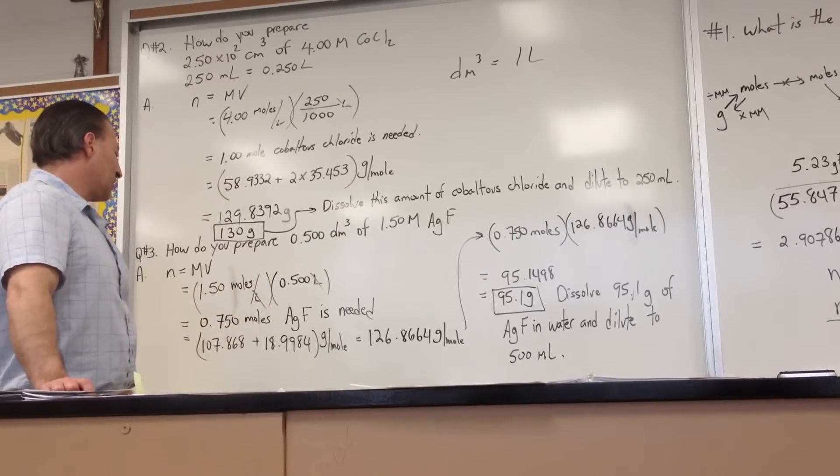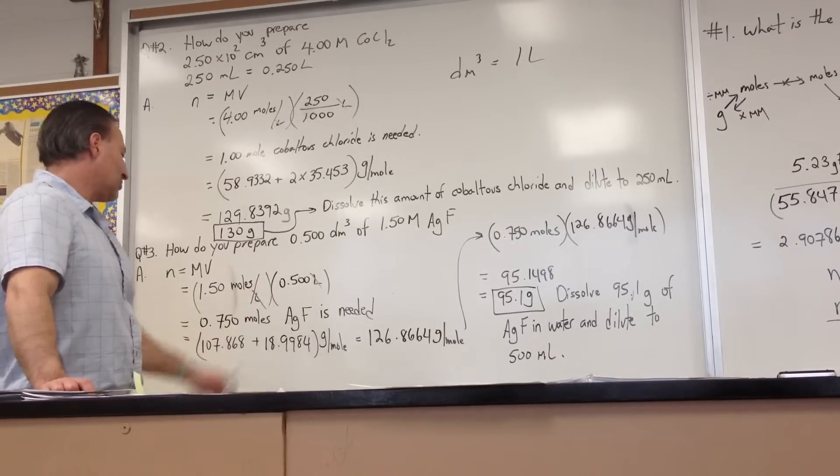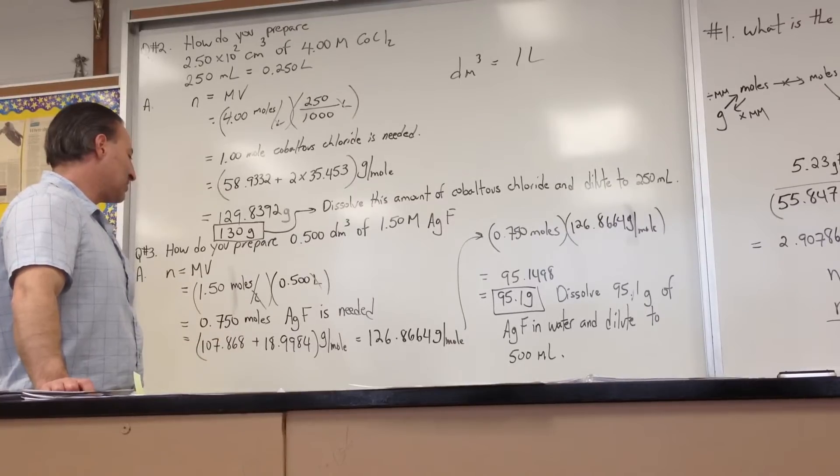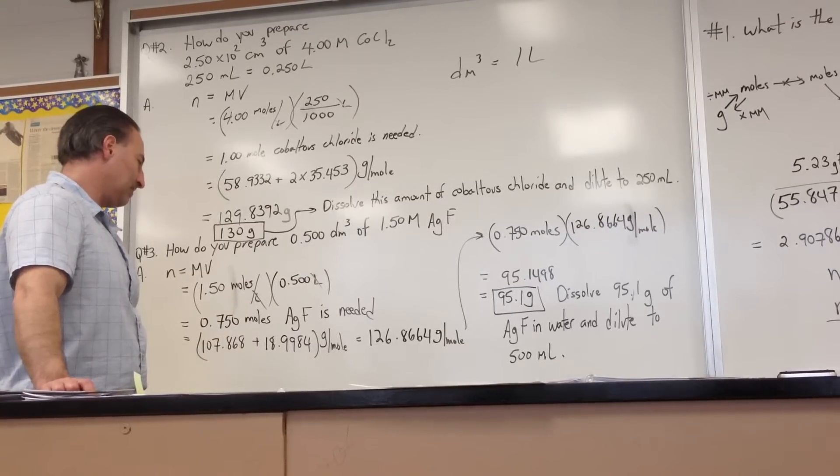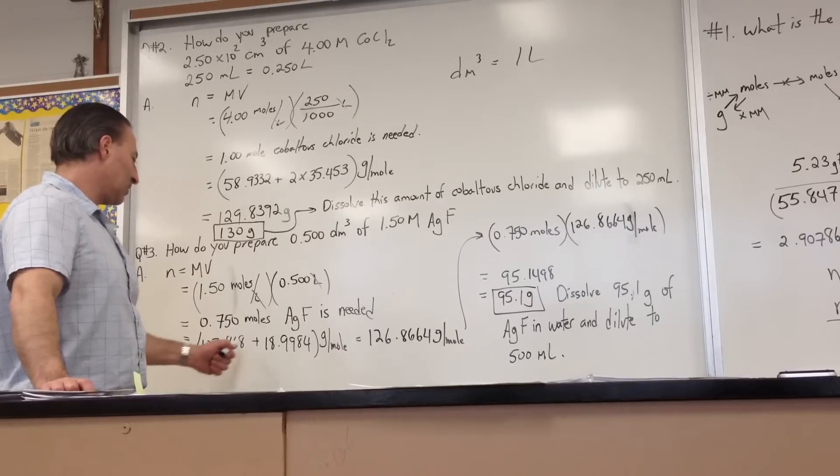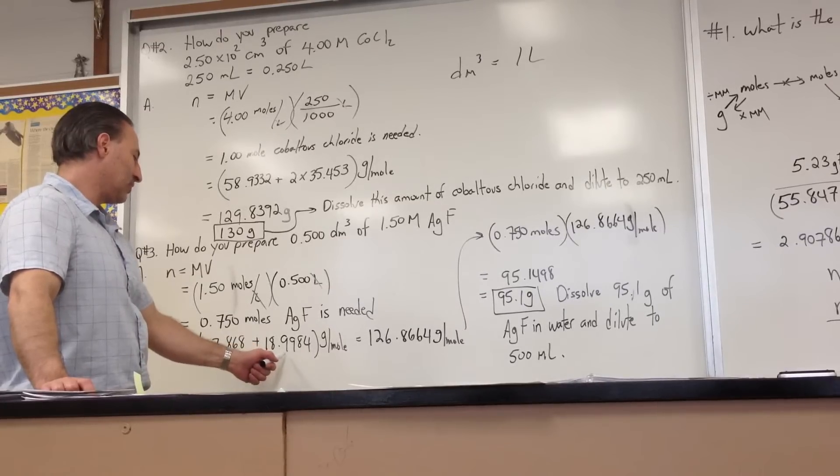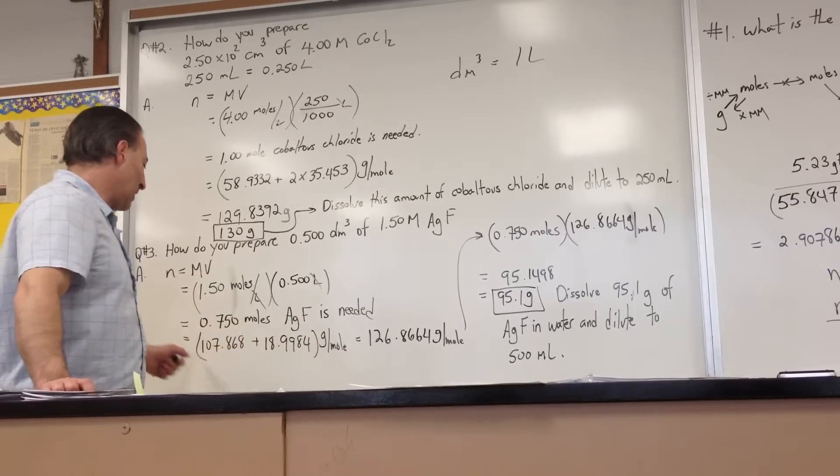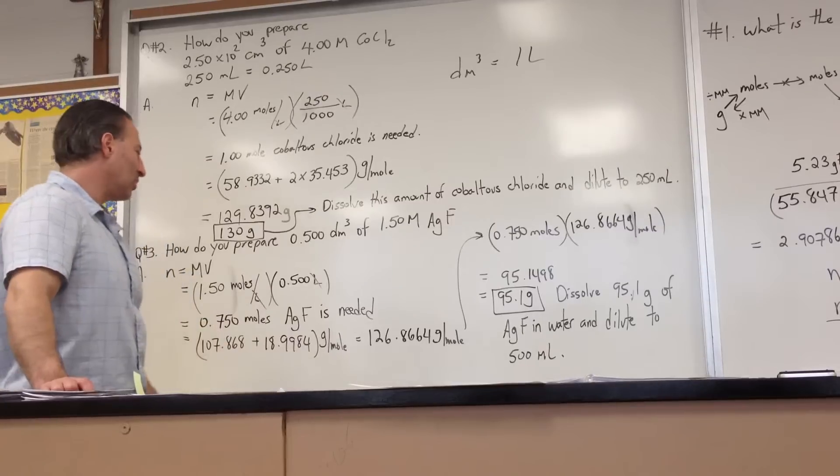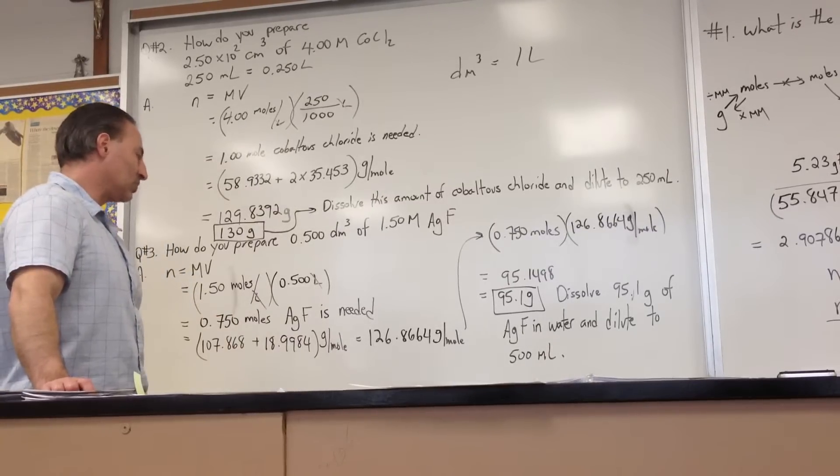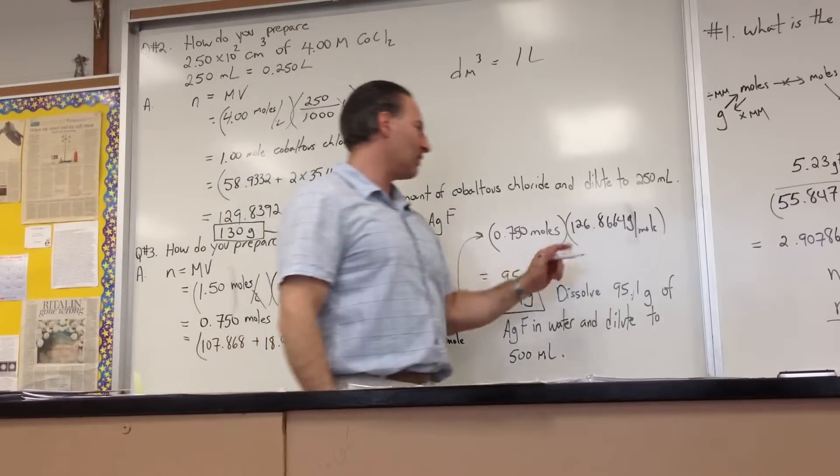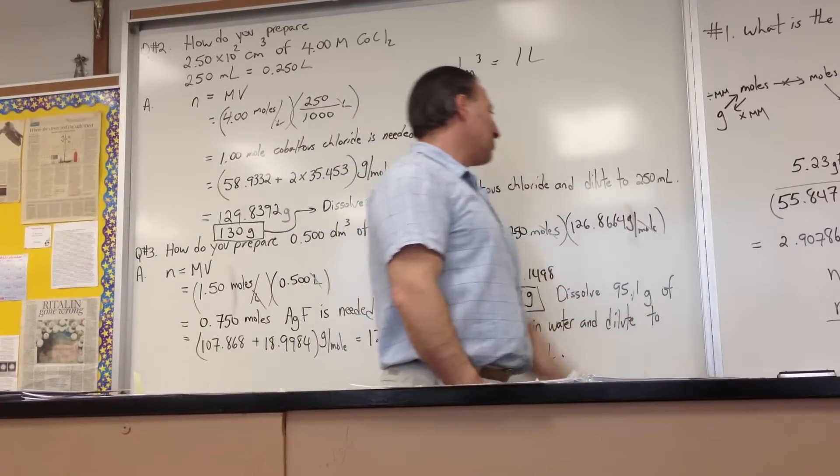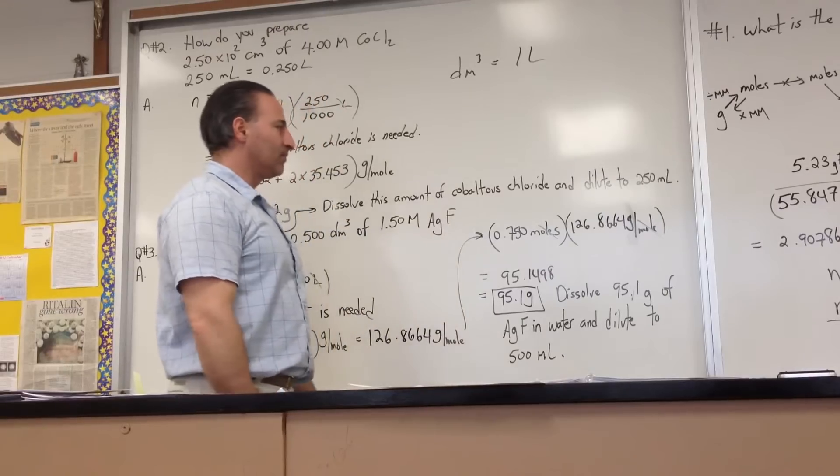We cross out the liters when we enter the values into the formula. 1.5 times 4.5, we need 0.750 moles of silver fluoride. Here's the mass of silver, here's the molar mass of fluorine, that's its molar mass, 126 grams per mole. We need 0.75 moles, so we multiply the two quantities together to find out how many grams of silver fluoride are needed.